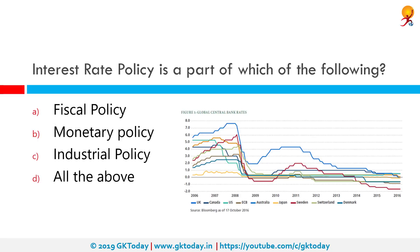Interest rate policy is a part of which of the following? Correct answer is monetary policy. The policy interest rate is an interest rate that the monetary authority or central bank sets in order to influence the evolution of the main monetary variables in the economy, such as consumer prices, exchange rate, or credit expansion among others. Different countries have different policy interest rates.